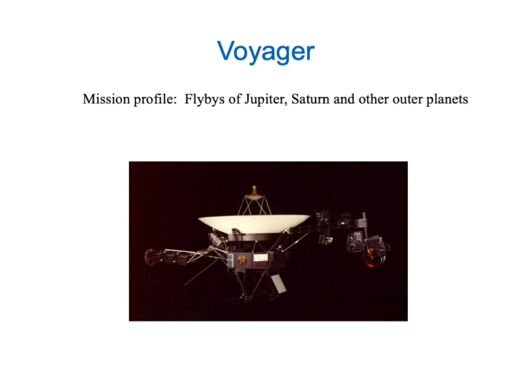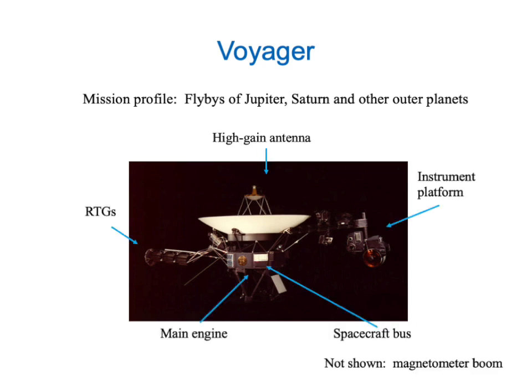Here's one of the two identical Voyager spacecraft that made flybys of Jupiter and the other outer planets. Going around clockwise starting at the left, we see the radiothermal generators sticking out to the left. At the top, we see the dish-shaped high-gain antenna for communicating to Earth from hundreds of millions or billions of kilometers away. On the right, we see the instrument platform that can aim the cameras and other sensors in various directions. That boxy middle part is the spacecraft bus, and at the bottom is the main engine that allowed it to make midcourse corrections. There's also a long pole with a magnetometer at the end, put at the end of a pole so that the metal body of the spacecraft won't affect the readings.